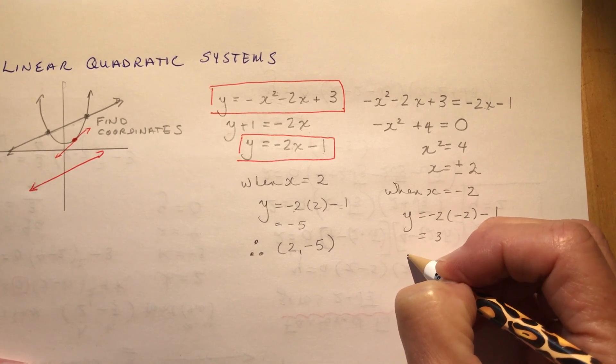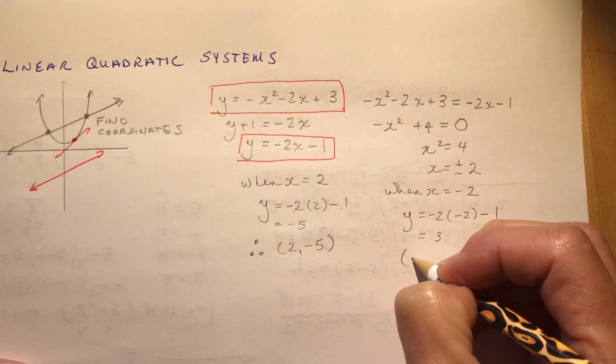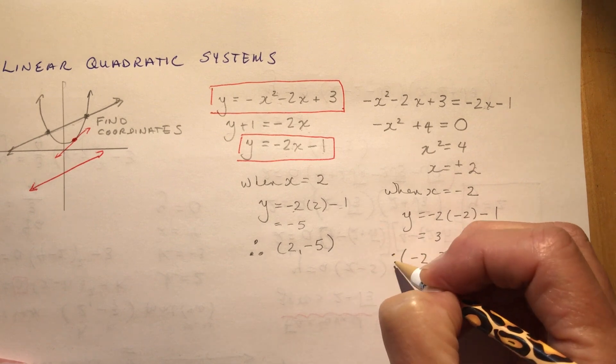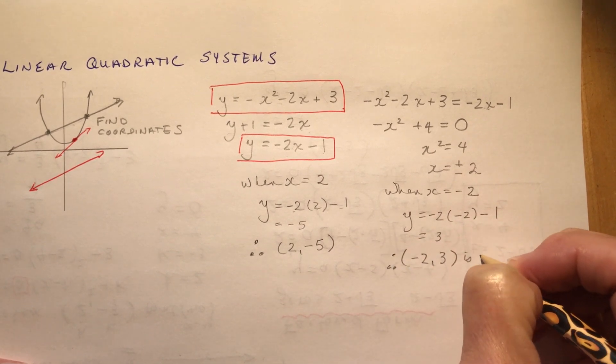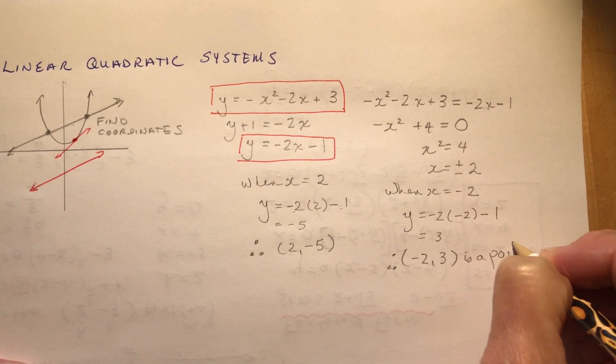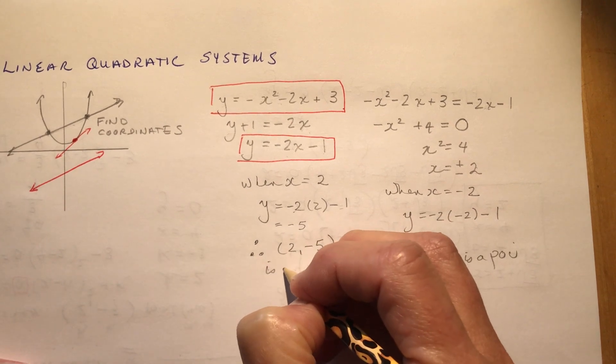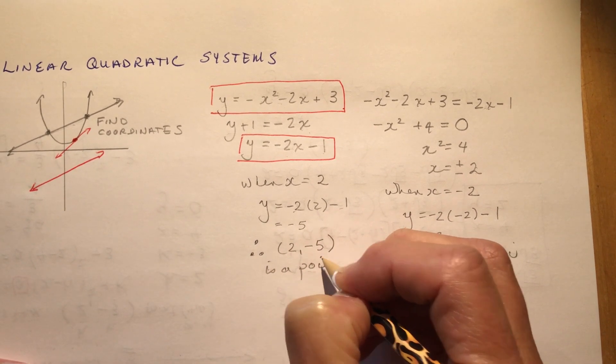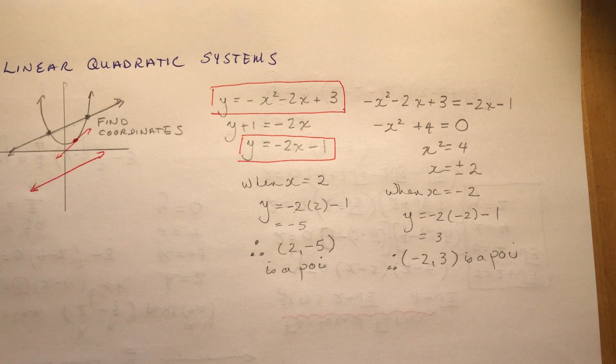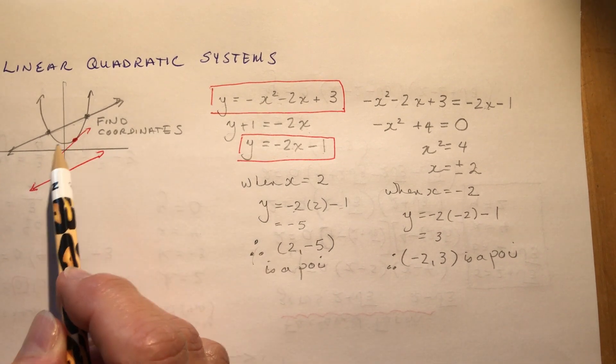The other one, I have to also plug in x is minus 2 and I would have y equals minus 2 times minus 2 minus 1 and that would be 3. So x is minus 2, minus 2, 3 is a point of intersection. So that's where the two functions intersect.